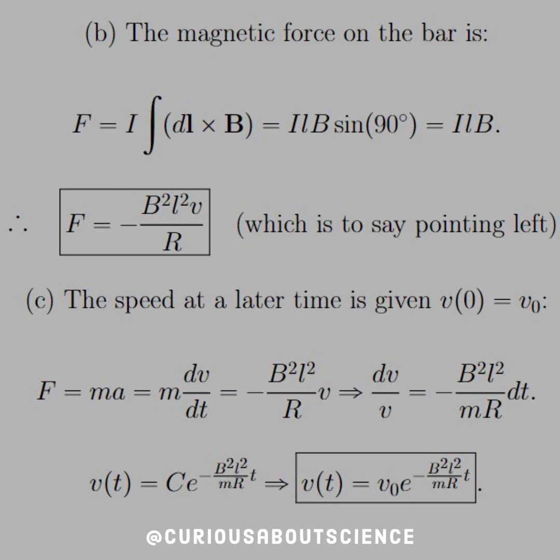Again, a separable equation. We've seen these before. Set it up, solve it through, and we see that applying the initial condition yields V of T is equal to V naught e to the negative B squared L squared over MR times T. So these exponentials definitely keep playing a role here.